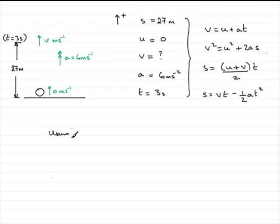Using V equals U plus AT. What have we got? We've got V equals U at zero plus A at six, and the time is three seconds. So therefore, quite simply, V equals 18.